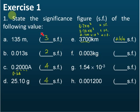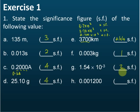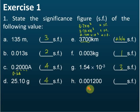G — this is 3 significant figures. That's correct. The last one — this one — how many significant figures? This is 4 significant figures.